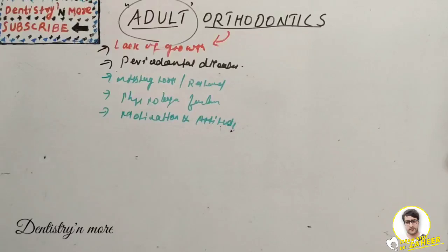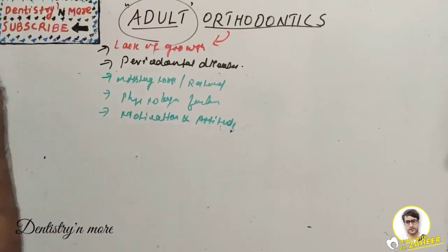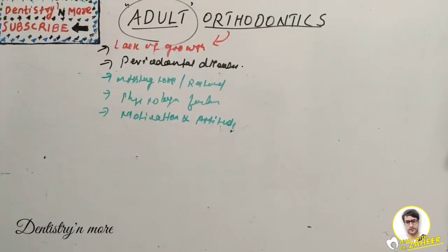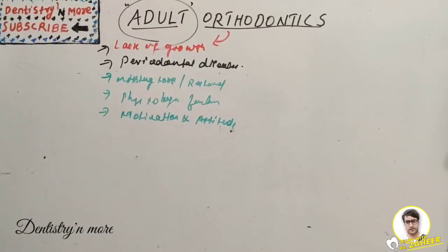Regarding missing or heavily restored teeth: tooth loss may result in drifting and tilting of adjacent teeth and over-eruption of opposing teeth, along with atrophy of the alveolar bone. Heavily restored teeth are more common in adults and can complicate orthodontic treatment because bonding to restoration material is difficult.